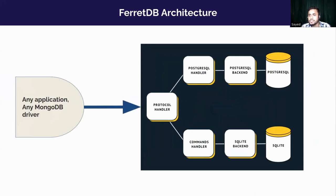Here is the architecture of FerretDB. When an operation comes to FerretDB, FerretDB's protocol handler identifies the command coming from any application or any MongoDB driver, and then passes it to either a PostgreSQL handler or any backend database commands handler. That handler then stores the data into the respective database like PostgreSQL or SQLite. So we can see the flow here.